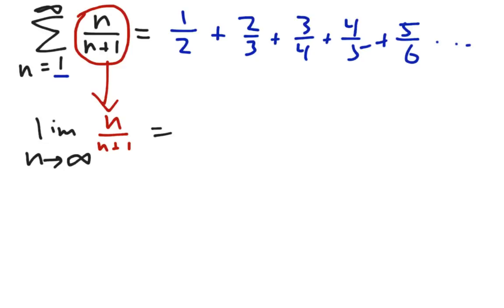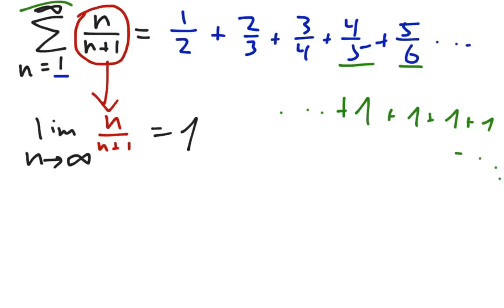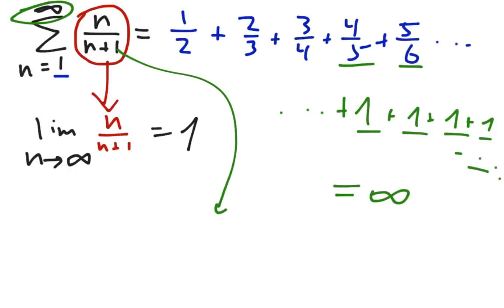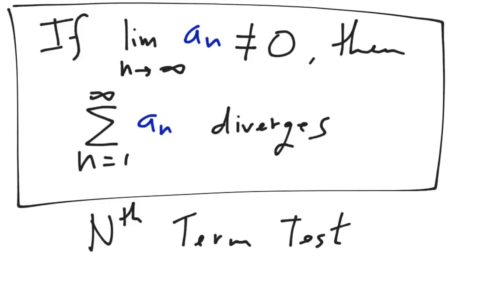Using L'Hôpital's rule or dominant terms, this limit is 1. Which means that as we go farther and farther out to infinity, we'll essentially be adding plus 1, plus 1, plus 1 infinitely many times, because the series never stops. Clearly, if you add up 1 infinitely many times, you get infinity. Therefore, this original series diverges. Using the nth term test, we say it diverges because we got 1, and 1 does not equal 0.